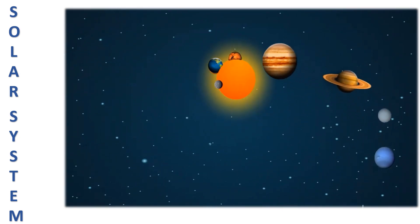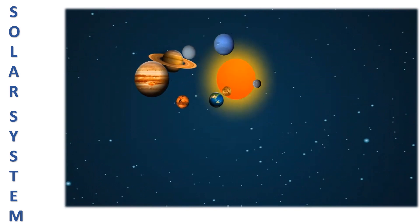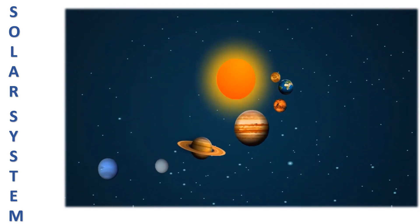Eight heavenly bodies, called planets, move around the sun. Our earth is a planet too.